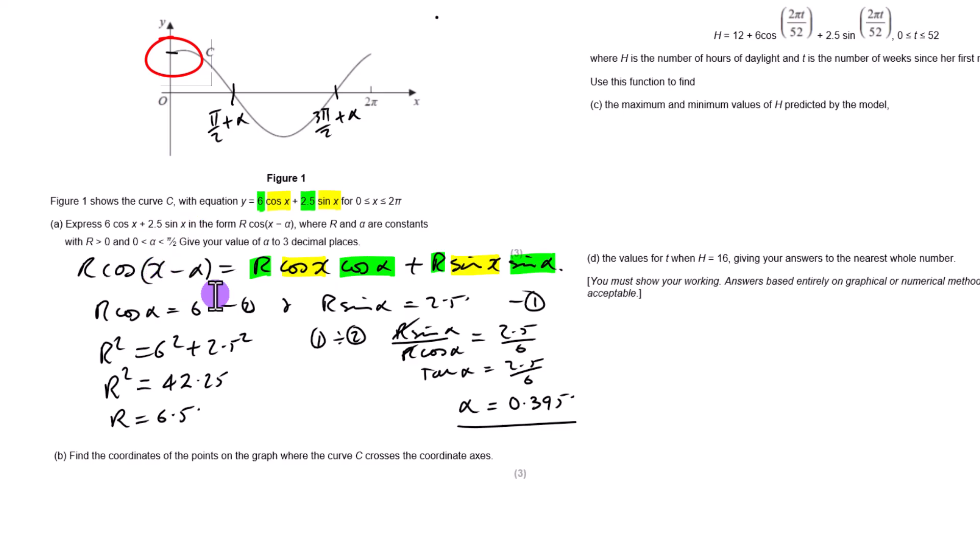So if you make x equal to 0 here, we've got 6.5 cos of 0.395, and I think that comes out as 6. So it crosses the axes at 0, 6. And then we're going to have pi by 2 plus alpha, which comes out as 1.97 comma 0. And then we've got 3 pi by 2 plus alpha, which comes out as 5.11. So those are our three points where it crosses the axes.